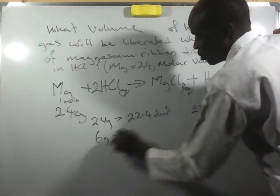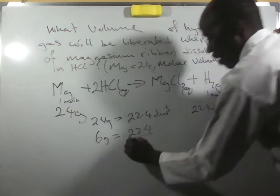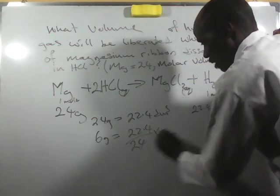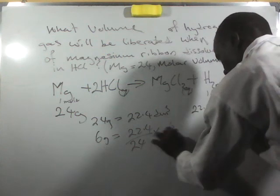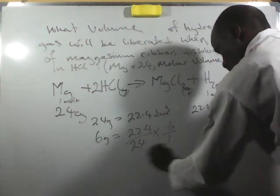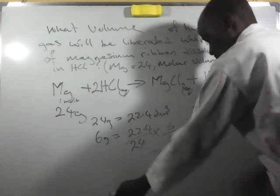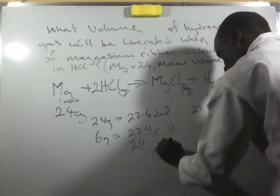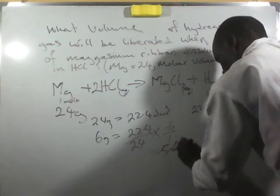6 grams will be 22.4 over 24 times 6 over 1. So when we cross multiply, we will have it to be 5.6 dm³.